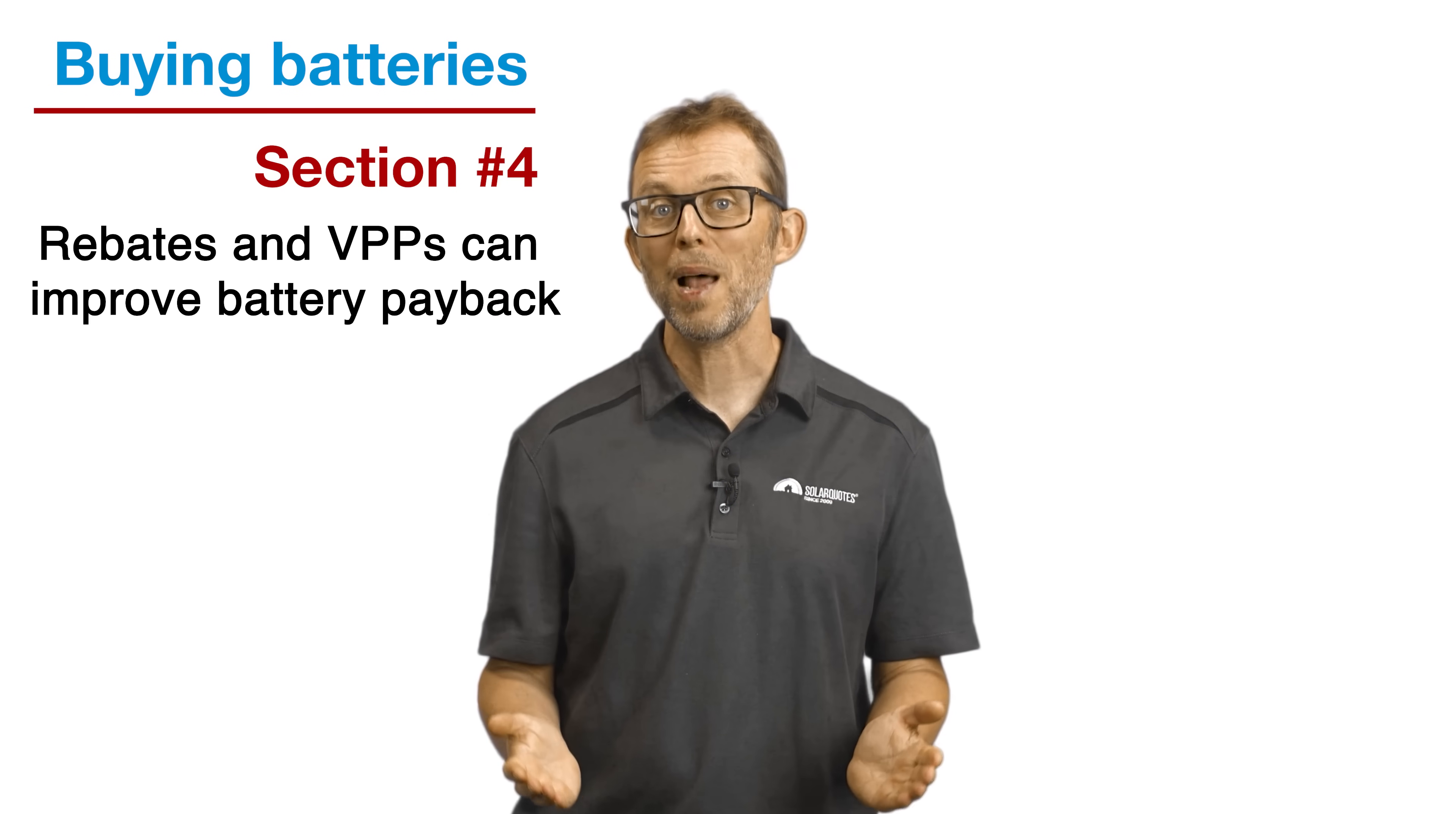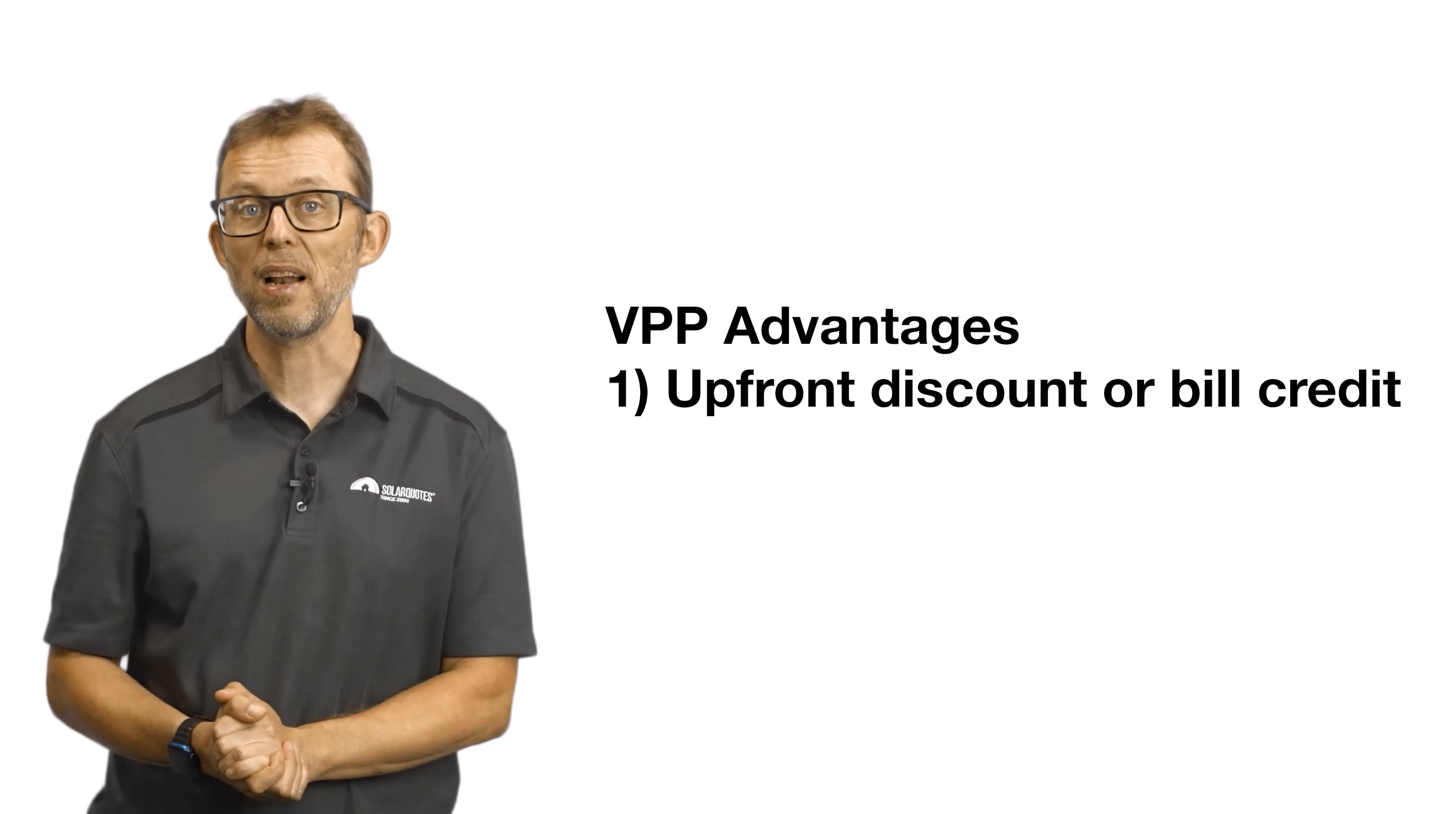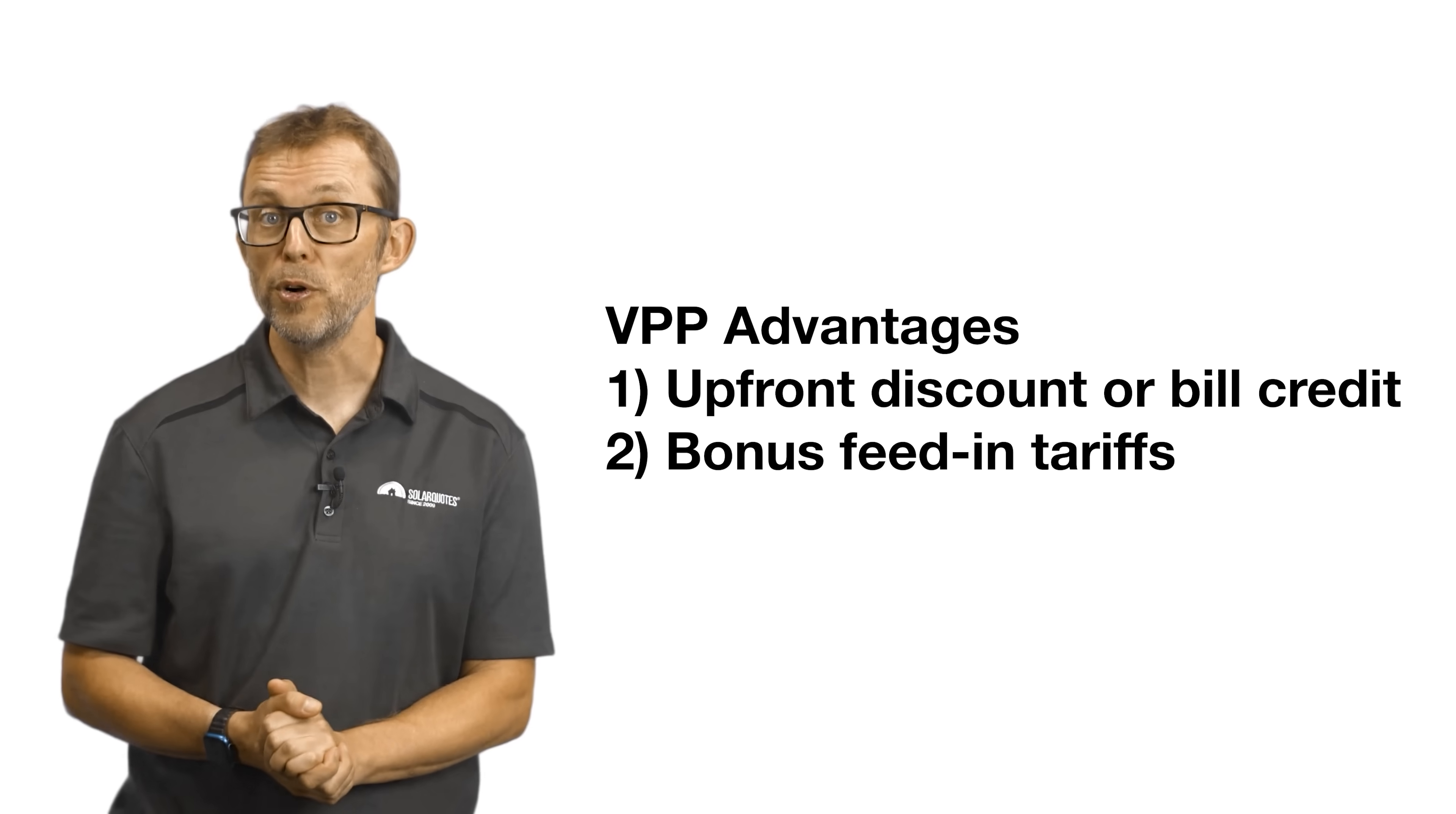Point four. Rebates and virtual power plants can improve battery payback. There are two ways to pay less for a battery. State level rebates and virtual power plants or VPPs. For rebates at the time of filming, unlike for solar power, there is no federal battery rebate. Sorry. For VPPs, most states have at least one VPP available. There are two advantages of VPPs and two drawbacks. Advantage one. You may get an upfront discount on a battery system if you buy it from the VPP directly. Some VPPs will give you a monthly bill credit. Others may give you a cash discount. Advantage two. Some VPPs pay you a bonus for charging or discharging the battery when the grid needs support. Depending on how generous the VPP is, this may substantially improve your battery economics.